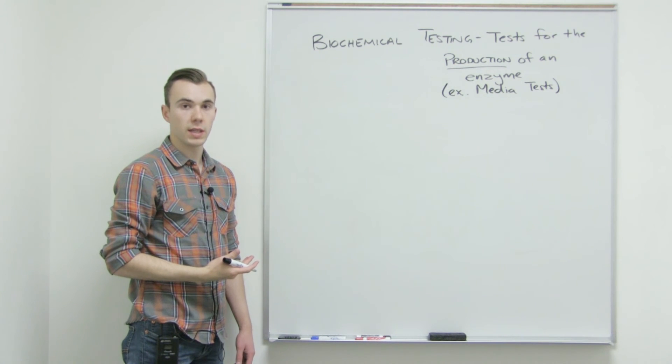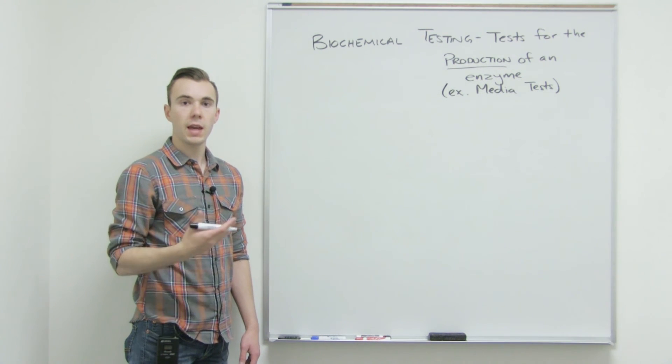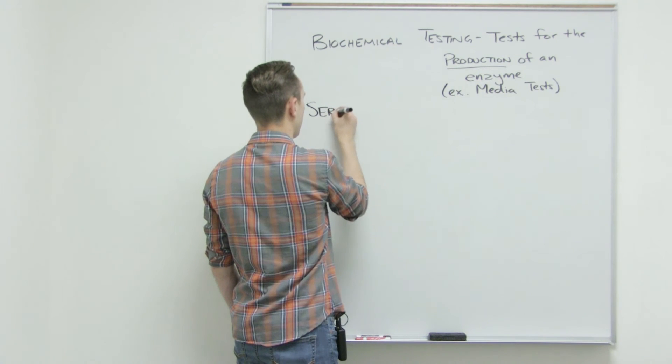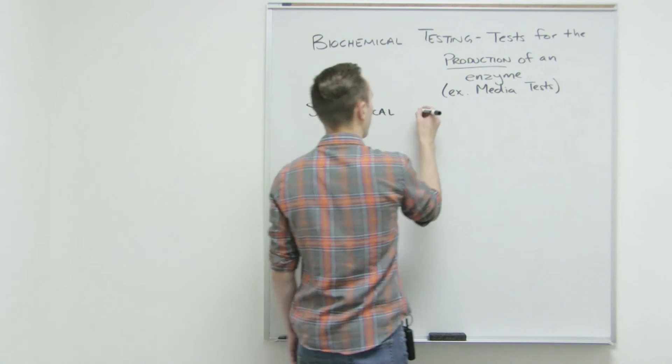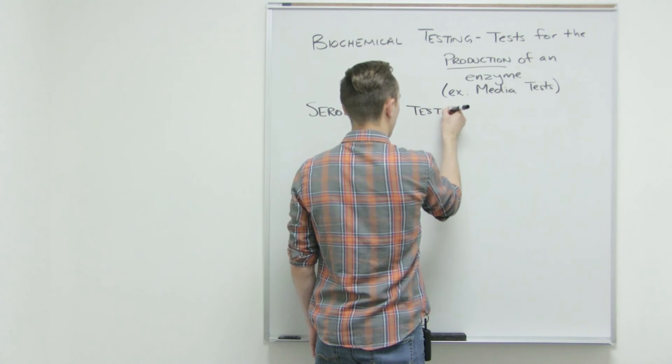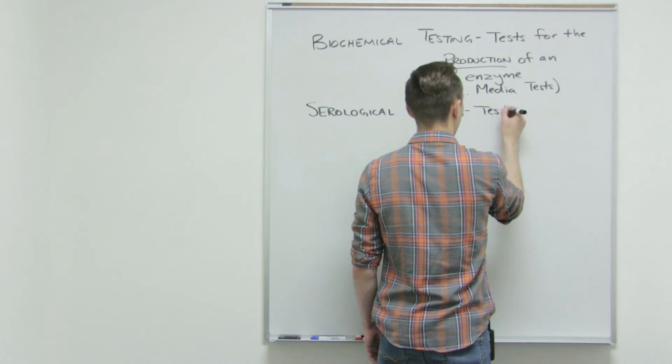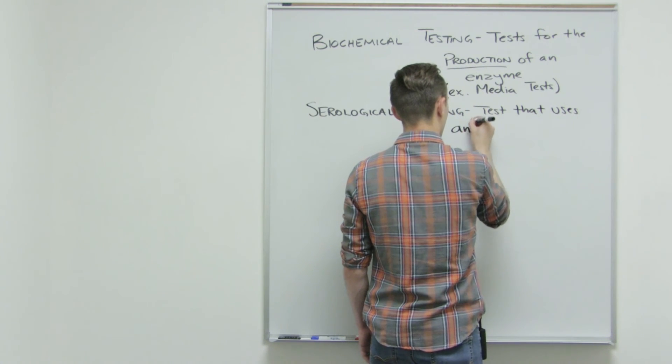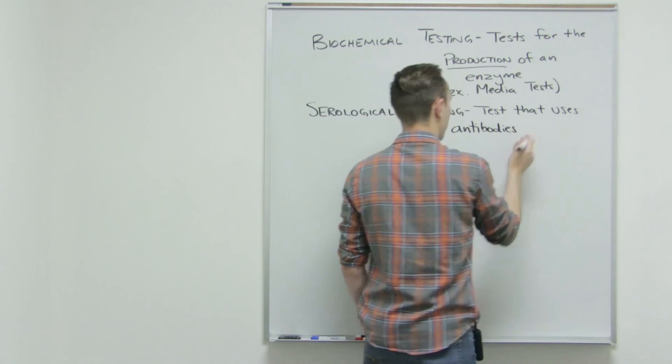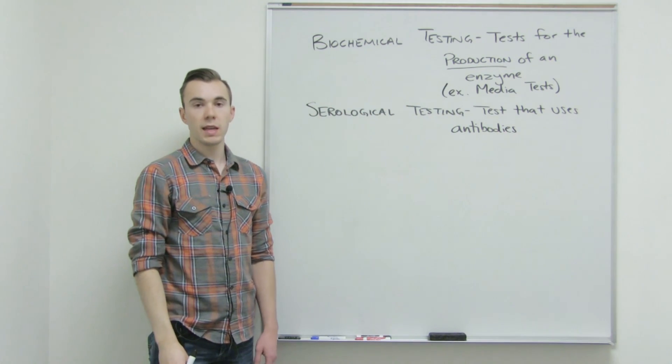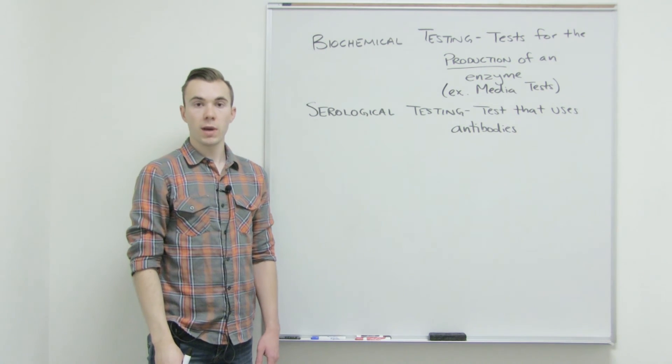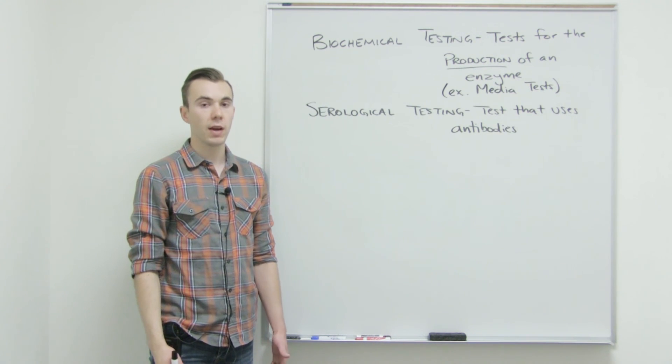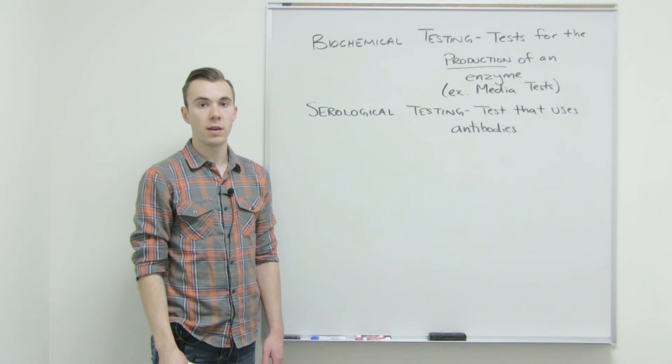Your other type of testing, the serological testing, is going to be useful for both bacteria and viruses, and that's because the test uses antibodies. Antibodies are going to be specific to an antigen. An antigen is anything foreign to the body. So both bacteria and viruses are foreign to our body, and so therefore, antibodies can be used or created for both bacteria and viruses, making this a helpful technique in identifying both species of microbes.